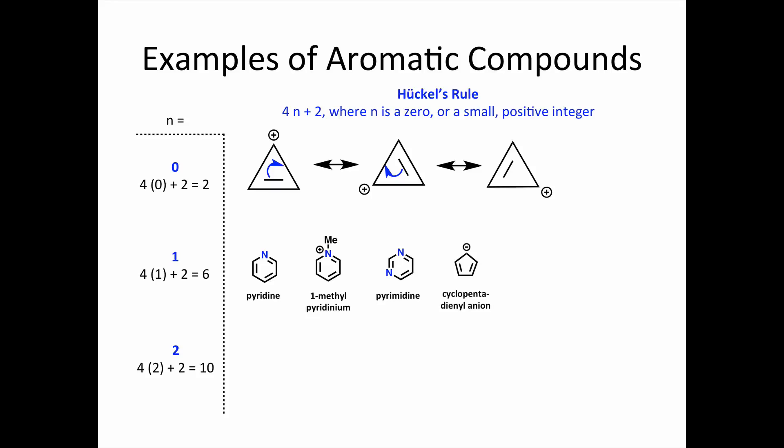The cyclopentadienyl anion is an aromatic 5-membered ring. The negative charge on carbon is a lone pair that can participate in the pi system. Building on this, pyrrole is also an aromatic compound.